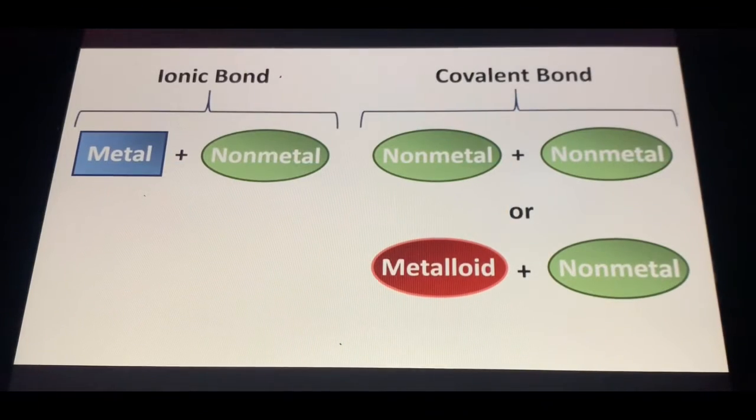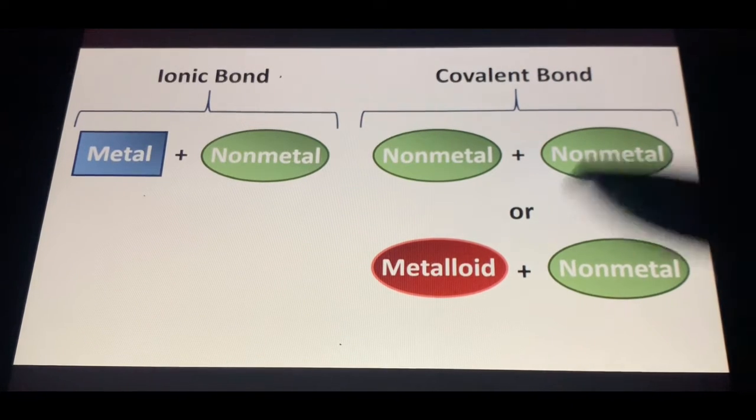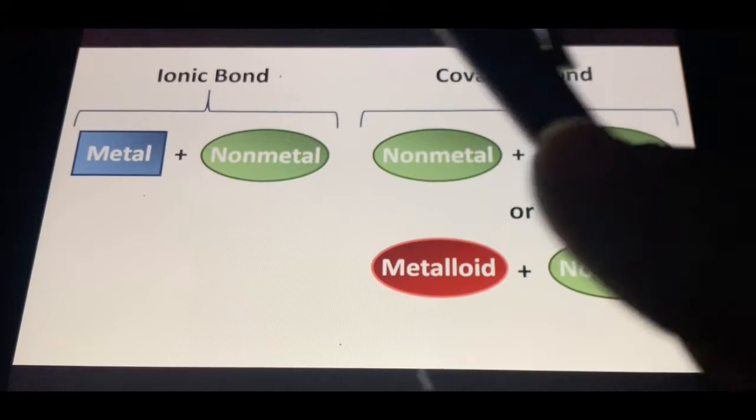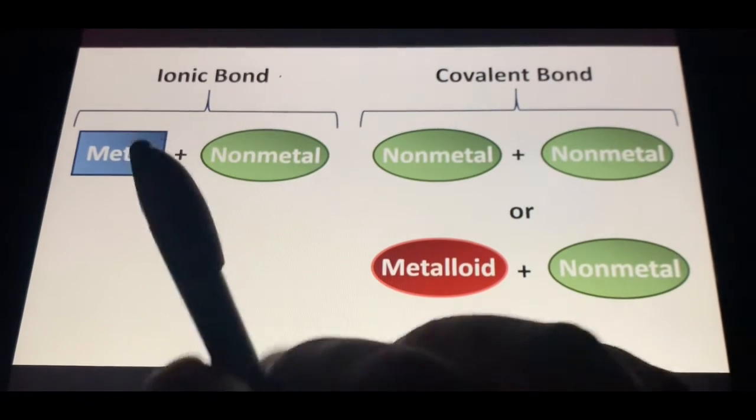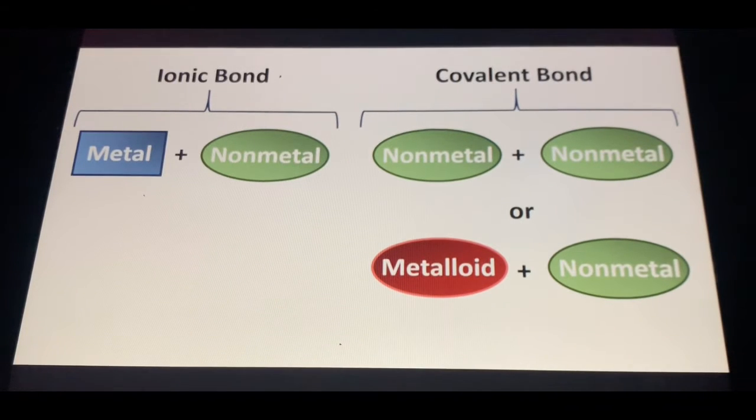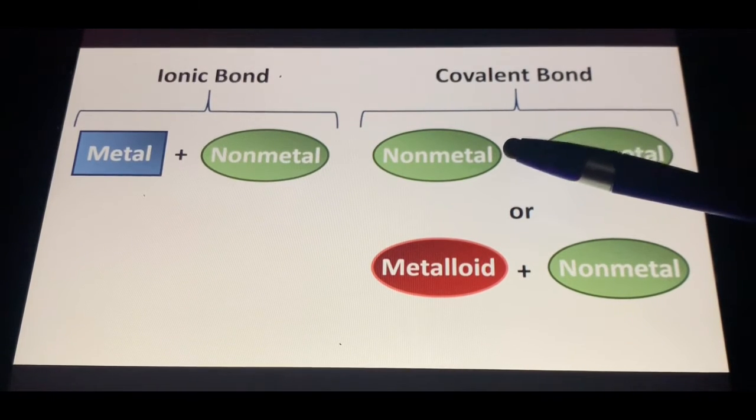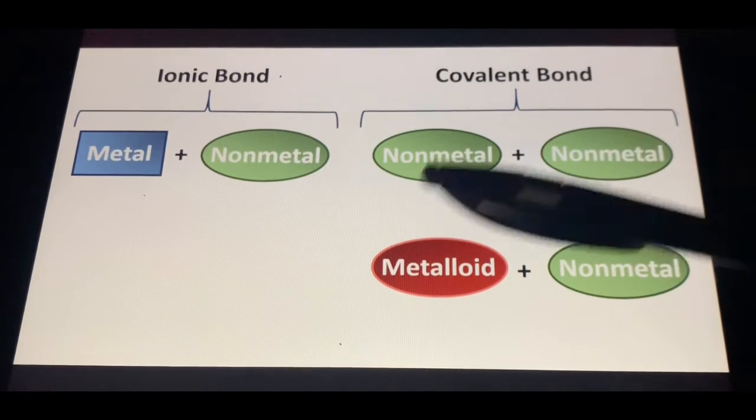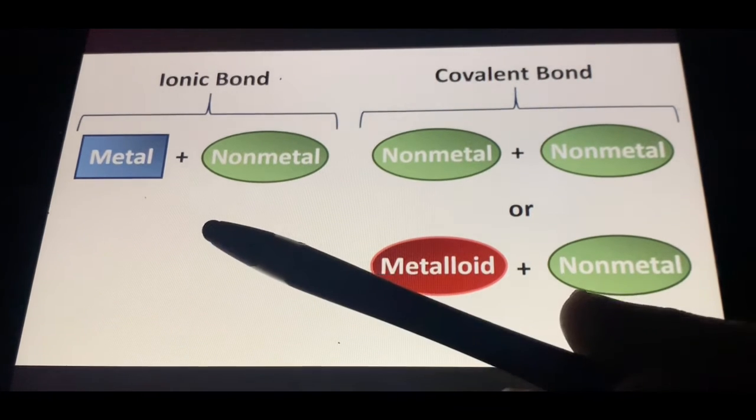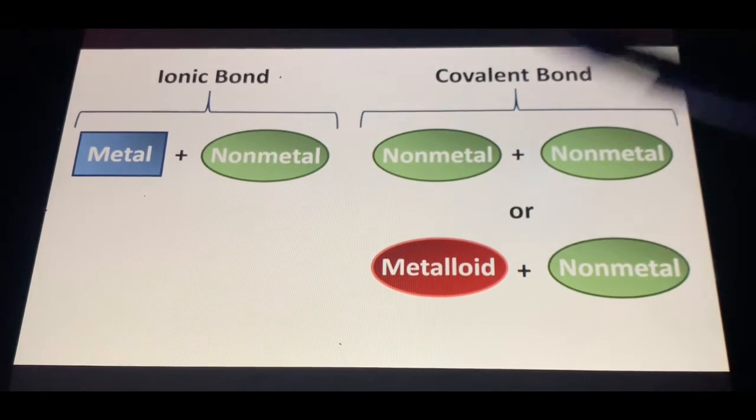Your definition of a covalent bond is going to be a non-metal and non-metal, or a metalloid and a non-metal. An ionic bond is going to be, at this level, a metal and a non-metal. The simplest way to know which type of bond you have is to look at the first element and ask yourself, is it a metal or a non-metal? If it's a metal, it's ionic. If it's a non-metal or a metalloid, then it's covalent.